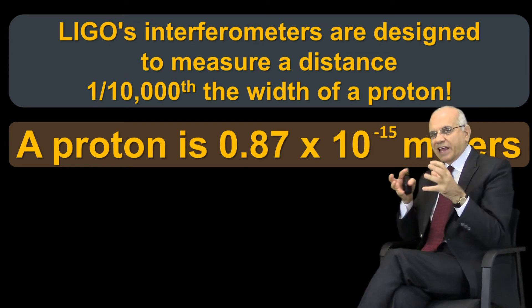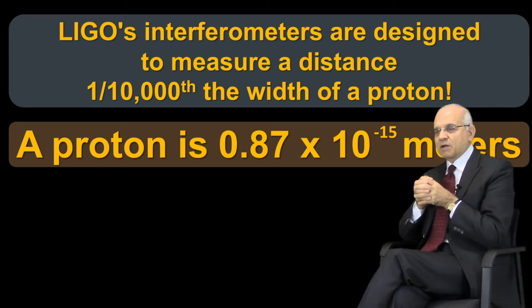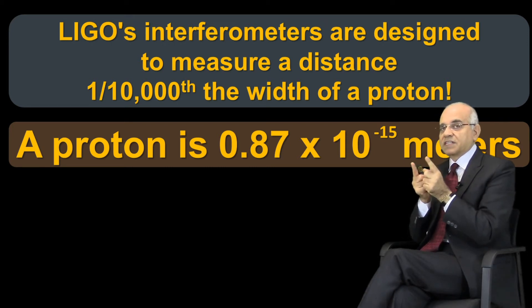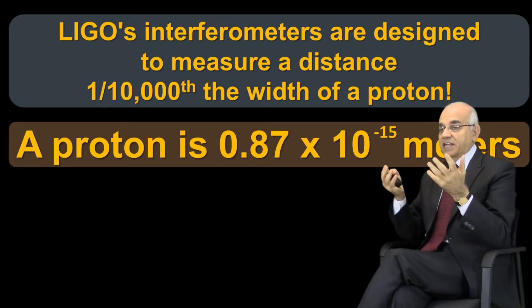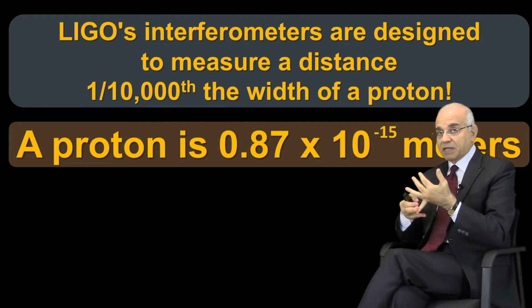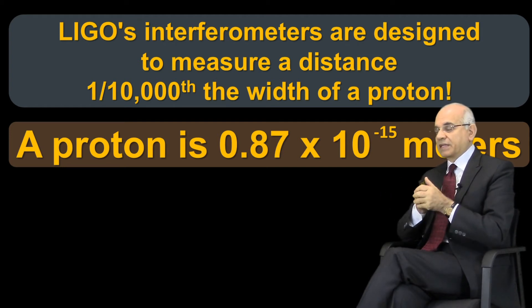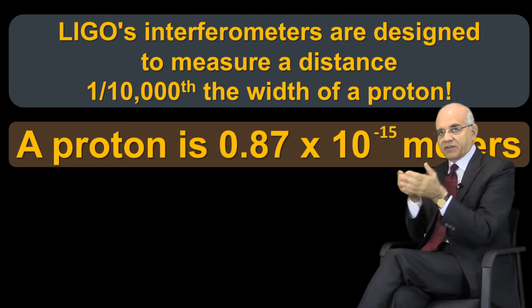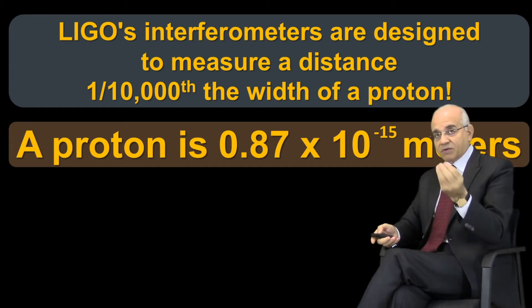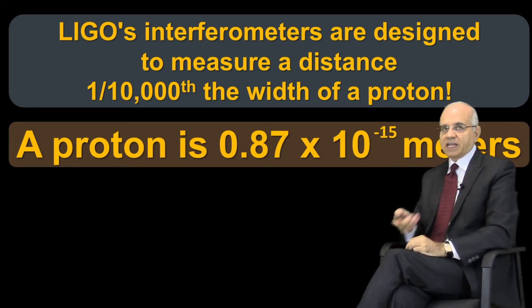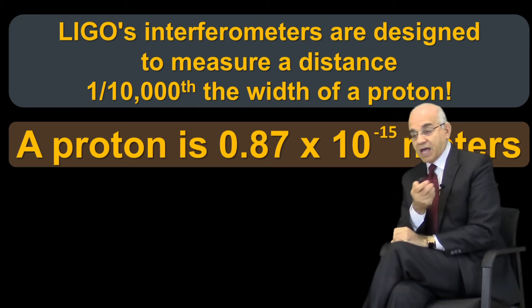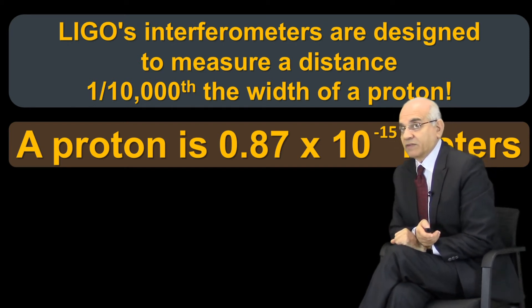Now you understand the layout of the experiment, the accuracy of distances we have to measure, gravitational waves, laser beams, and how waves behave. So now you're ready to understand the rest of the LIGO experiment and how it detected gravitational waves.